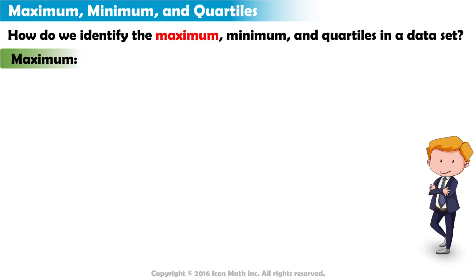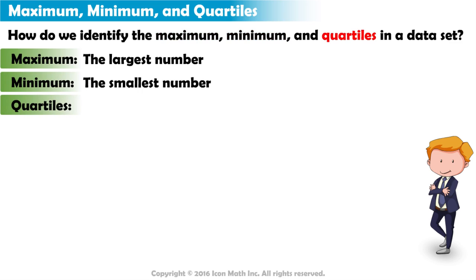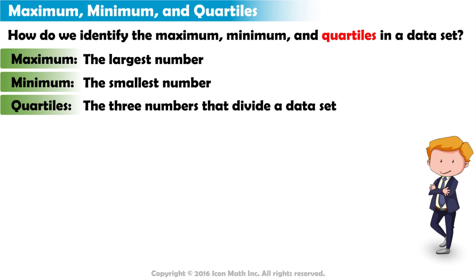The maximum is the largest number. The minimum is the smallest number. And the quartiles are the three numbers that divide a dataset into four equal groups.